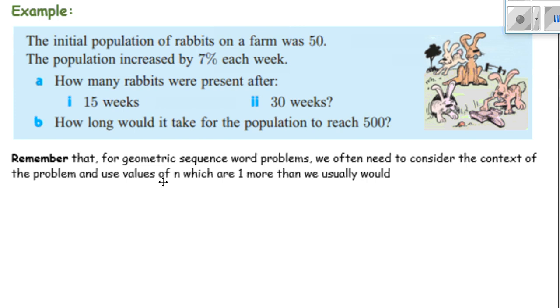Last example for this particular unit. The initial population of rabbits on a farm was 50. The population increased by 7% each week. So is that a geometric sequence or an arithmetic sequence? Geometric, yeah, exactly. Because it's increased by 7% each week.